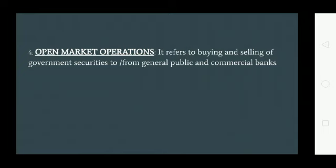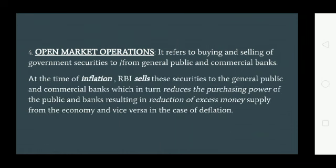The fourth instrument is open market operations — it refers to the buying and selling of government securities to or from the general public and commercial banks. At the time of inflation, RBI sells securities to the general public and commercial banks, which in turn reduces the purchasing power of the public and banks, resulting in a reduction of excess money supply from the economy, and vice versa in the case of deflation.